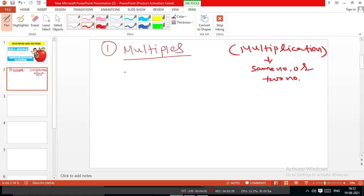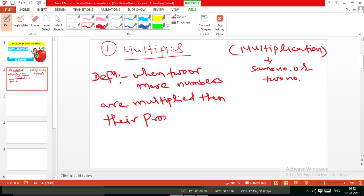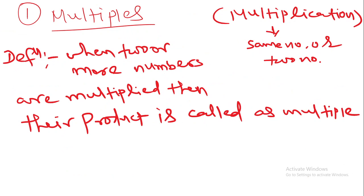The same thing happens with multiples also. So we write directly the definition: When two or more numbers are multiplied, then their product is called a Multiple.